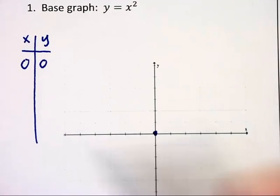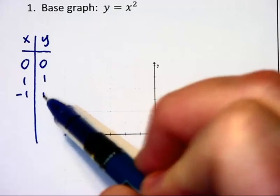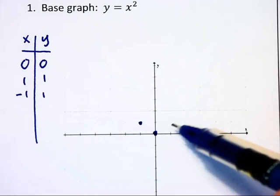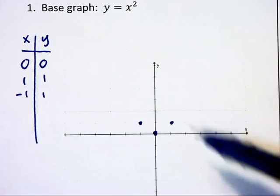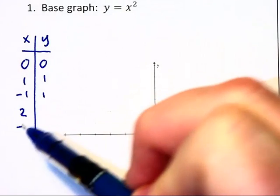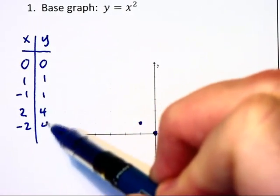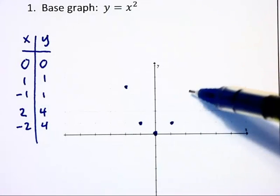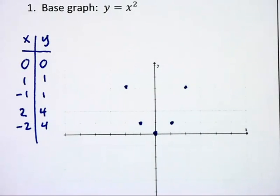We also know that one and negative one each square to one, so I can plot points at negative one one and one one. Two and negative two both square to four, so I can place graph points at negative two four and positive two four.